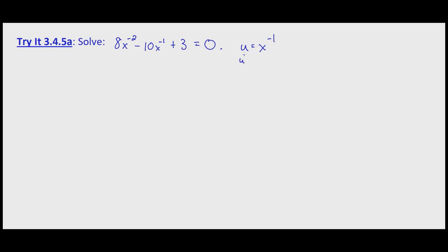So then we can substitute into the equation and get a quadratic. This gives us 8u squared minus 10u plus 3 equals 0.